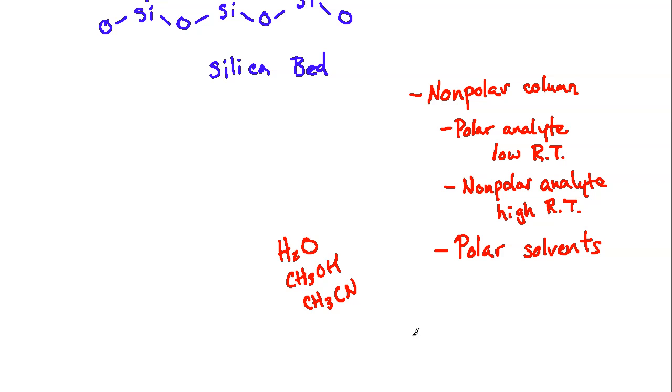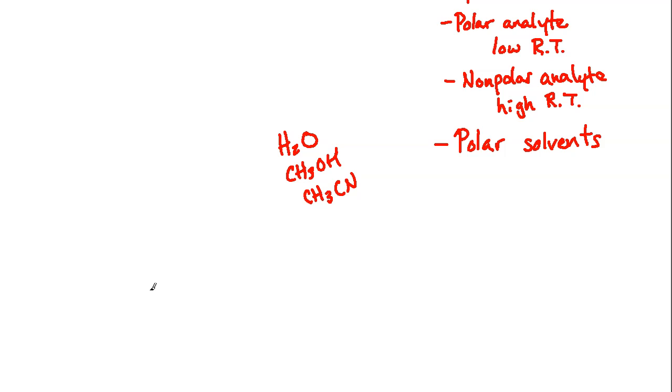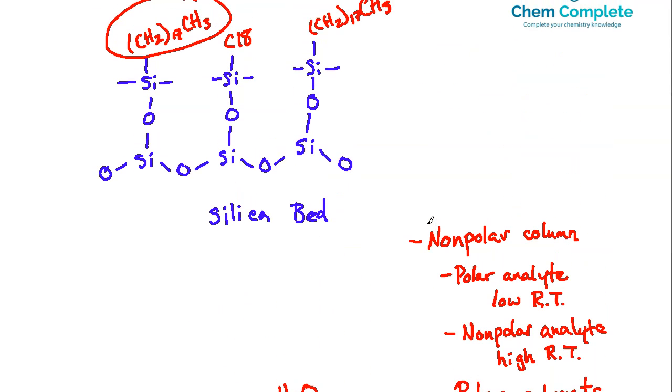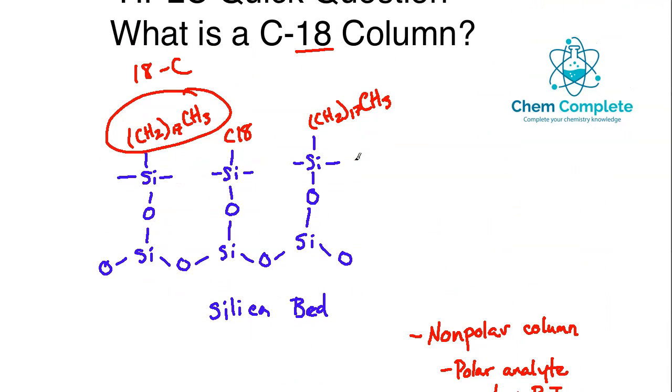Now, this overall is referred to as reverse phase HPLC. And reverse phase HPLC gets its name because the original HPLC setup was the opposite of this. It had a polar column and nonpolar solvents. And now when you flip it, that's where it gets the name reverse phase HPLC. And if you're interested in a lot more detail regarding reverse HPLC or HPLC in general, column chemistry, there's all sorts of things that happen with columns in terms of changing the groups, changing the solvents, end capping.